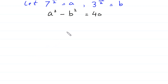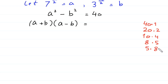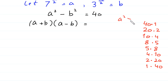We factorize the left side: a squared minus b squared equals a plus b times a minus b, and this equals 40. The factor pairs of 40 are: 40 times 1, 20 times 2, 10 times 4, 8 times 5, and their reverses. Since a squared minus b squared is positive, a squared is greater than b squared, meaning a is greater than b. Therefore a plus b is greater than a minus b.